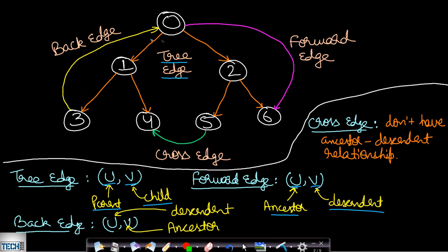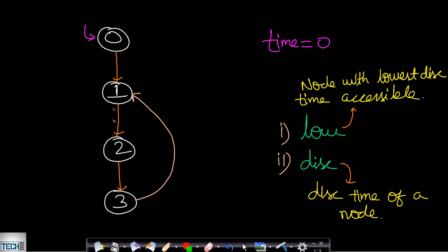A back edge is just the reverse of a forward edge — from a descendant to an ancestor. The fourth type is a cross edge: if you have vertices u and v with no ancestor-descendant relationship, that edge is a cross edge. You can see that from five to four there is a cross edge.